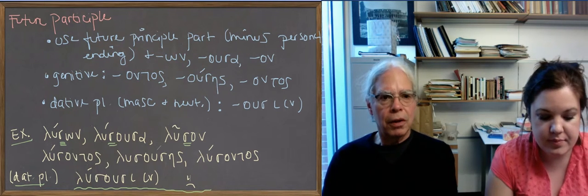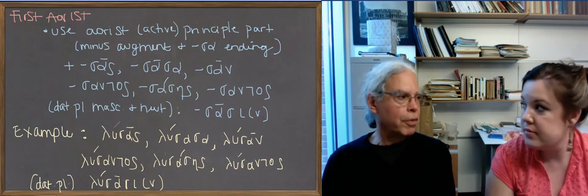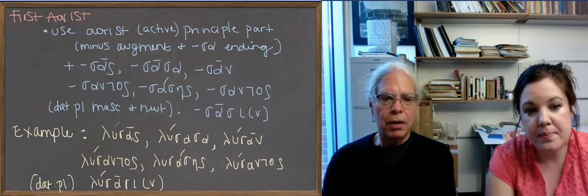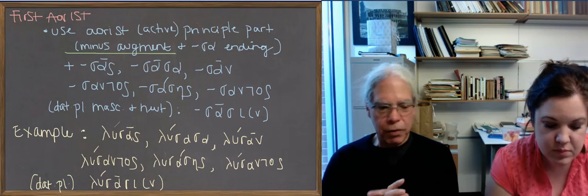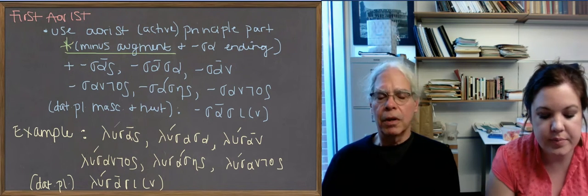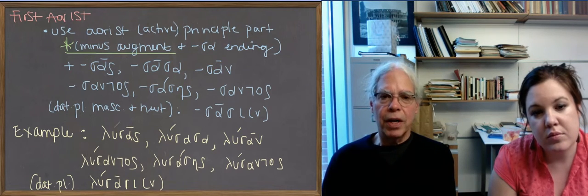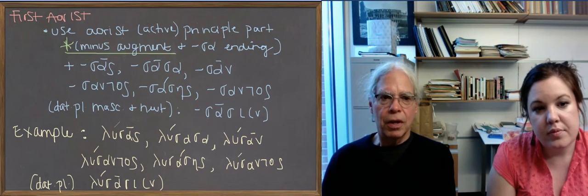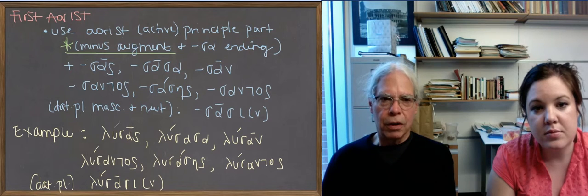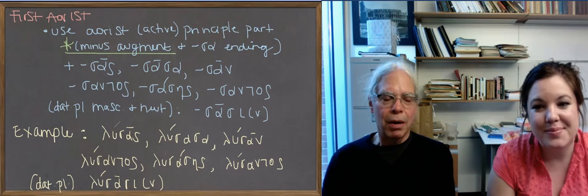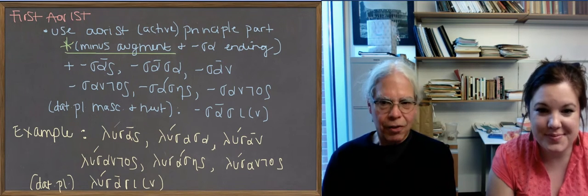So now let's move to the aorist participles. Remember, now we have two kinds of aorists. We have first aorists and second aorists. So here's how you make the first aorists, the things that we started with. You start with the aorist principal part. For example, for luo, it's elusa. And you remove the augment, because participles have aspect and not tense, we have to remove tense markers. So there's no augment in the aorist form of participles. So that gives you lusa. And we're saying also to remove the s-a ending. Because I think the best way to think of it is that the participle ending includes the s-a, that's the sign of the aorist. So if you remove the s-a from elusa and the augment, you get lu. In effect, you're back at the first principal part. And to that you add sas, sasa, san. The genitive is santos, sasēs, santos. Looks familiar, doesn't it? Looks a lot like on ousa on, right? Third declension forms in the masculine and neuter. First declension forms in the feminine gender.